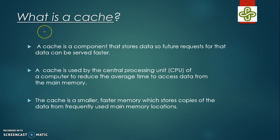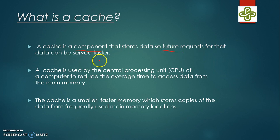So what is a cache memory? A cache is basically a component that stores the data so that your future requests for that data can be served faster. The CPU accesses the data from cache memory because the time taken to access the data from main memory is much larger. Also, caches are smaller and faster than the main memory.